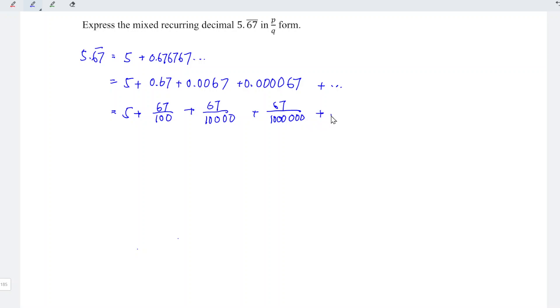Notice that this is simply a geometric progression with A equal to 67 divided by 100, and r equal to the second term divided by the first term, which is 1 over 100. Recall the sum to infinity formula: we have A divided by 1 minus r.